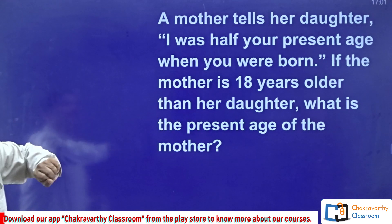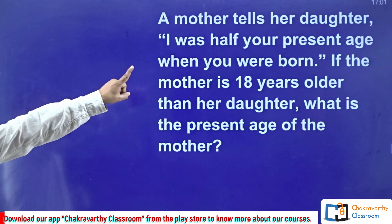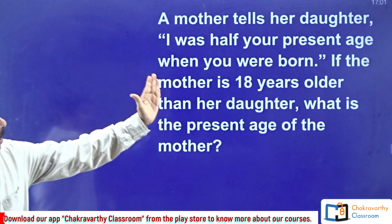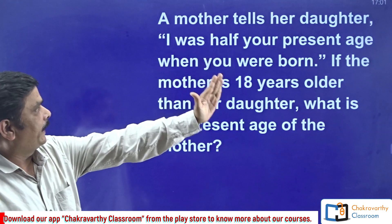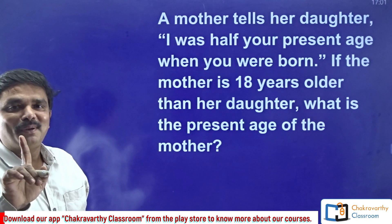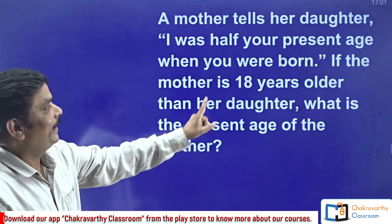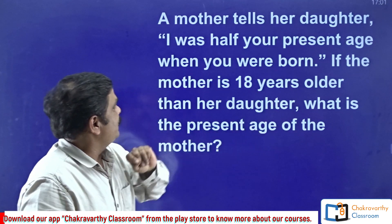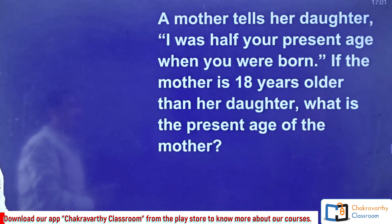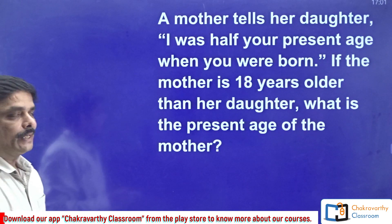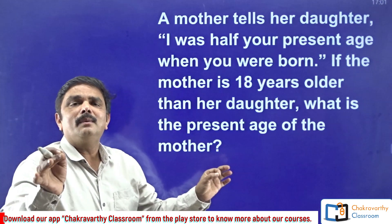Now, what they have given here: Mother tells her daughter, 'I was half your present age when you were born.' Simple statement. Then, if the mother is 18 years older than her daughter, what is the present age of the mother?